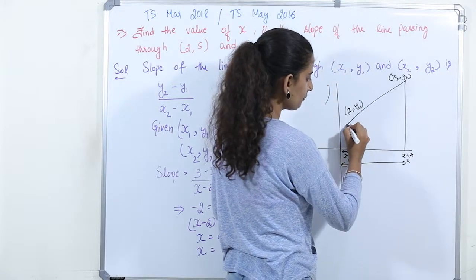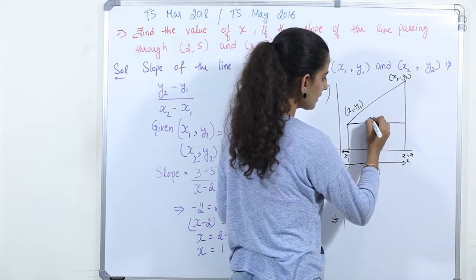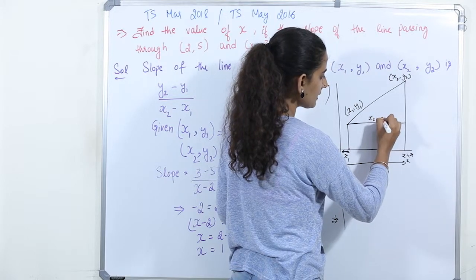So when you write a line here, this is x2 minus x1.